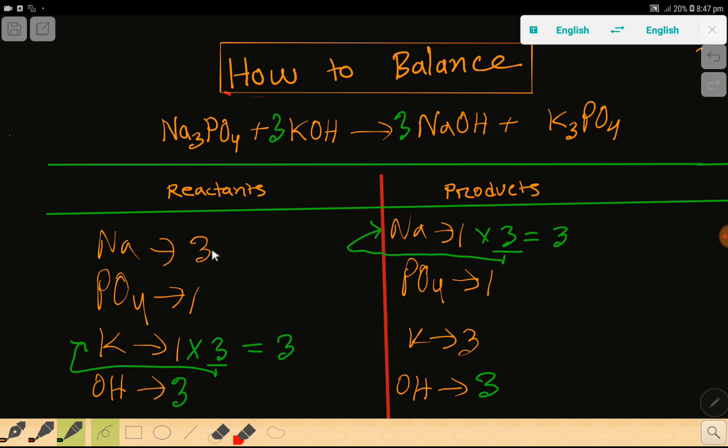So look. Sodium 3, 3. Phosphate 1, 1. Then potassium 3, 3. Then hydroxide 3, 3. So everything is balanced. So you can say that this is the balanced reaction.